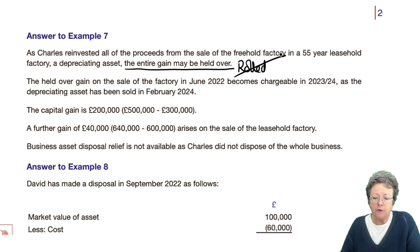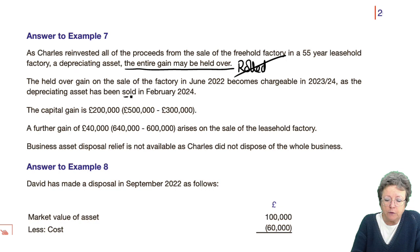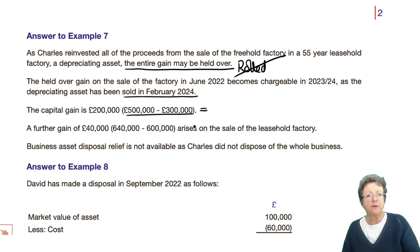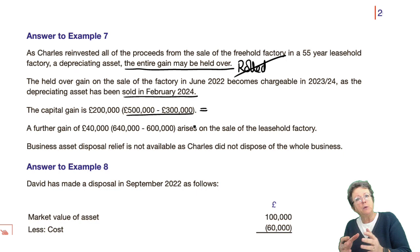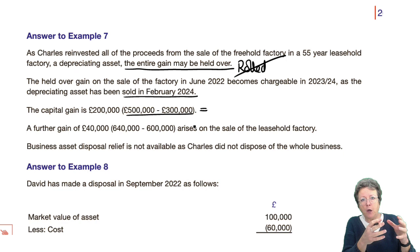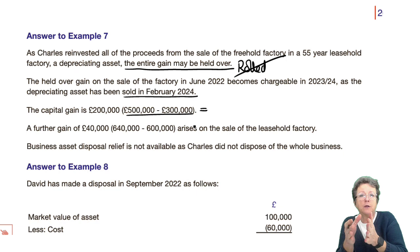The held-over gain on the factory becomes chargeable in 2023 when it was sold. So it's held — you don't pay tax on it — it's deferred. You only hold it until the earliest of those three things: it's disposed of, it's no longer used, or 10 years. In this case they sold it, so that's when you pay the tax. You don't actually have to pay it until later.